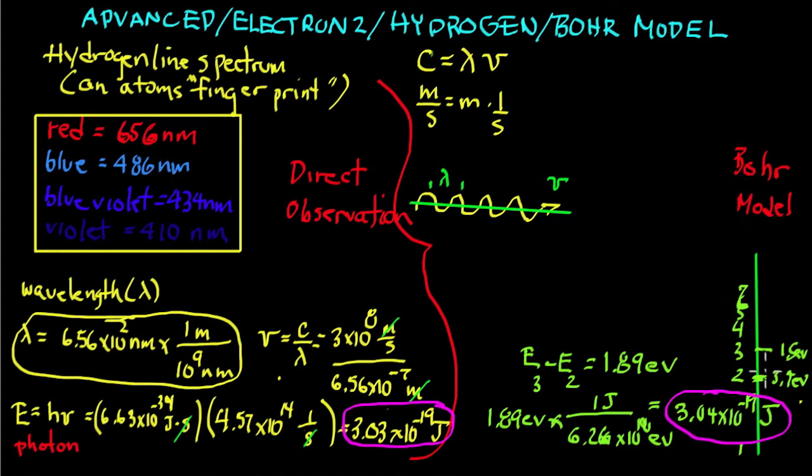Now here's what Bohr did. Bohr said that an electron jumps from the second level to the third level. See, they can jump from all different levels, second level to an excited level 3.